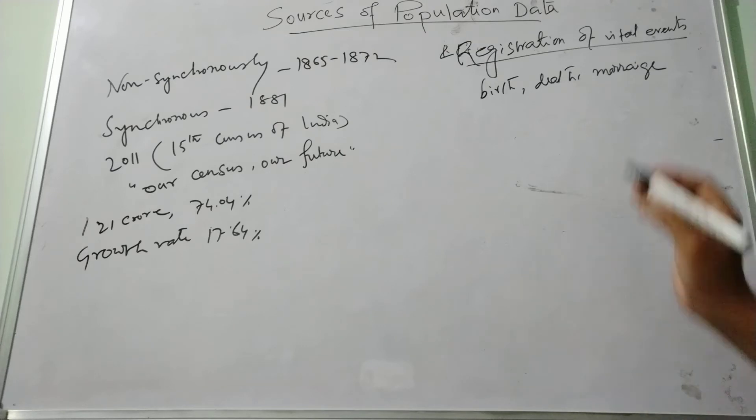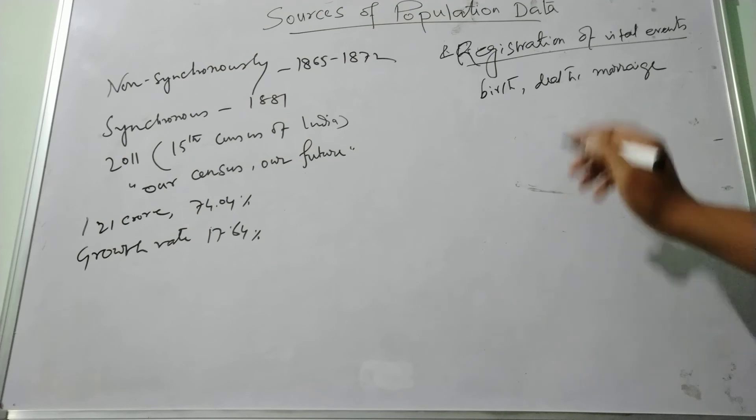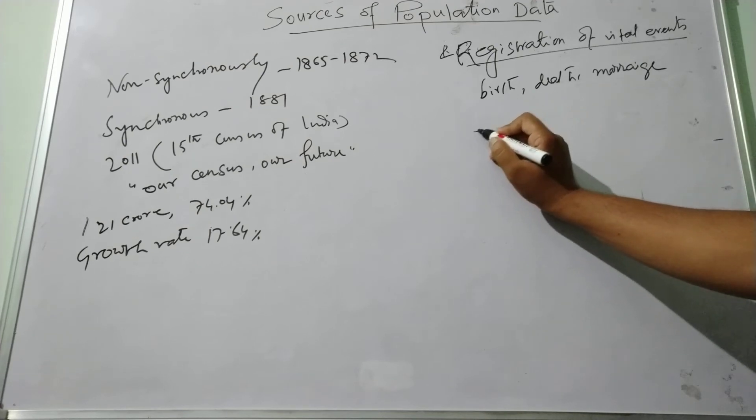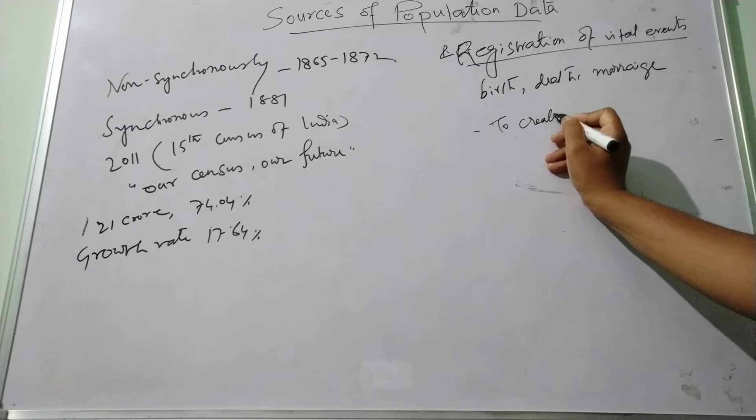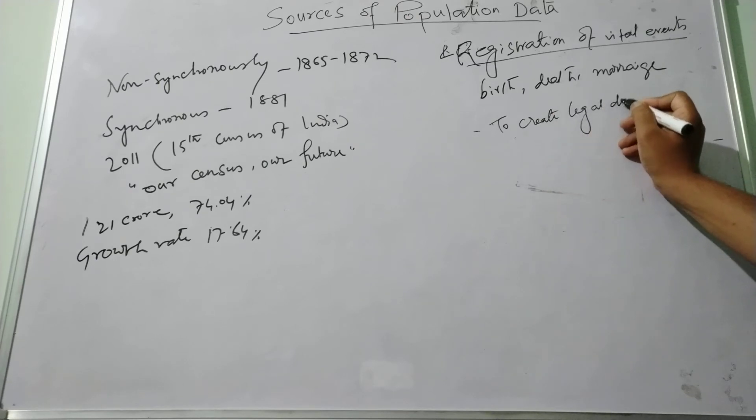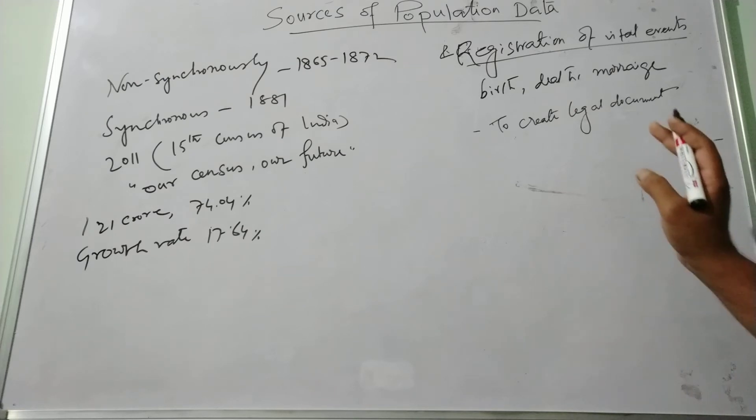The primary purpose of this registration system is to create a legal document that can be established and protect the rights of individuals. This system registers all births and deaths, issues birth and death certificates, including the cause of death information also recorded through this system.